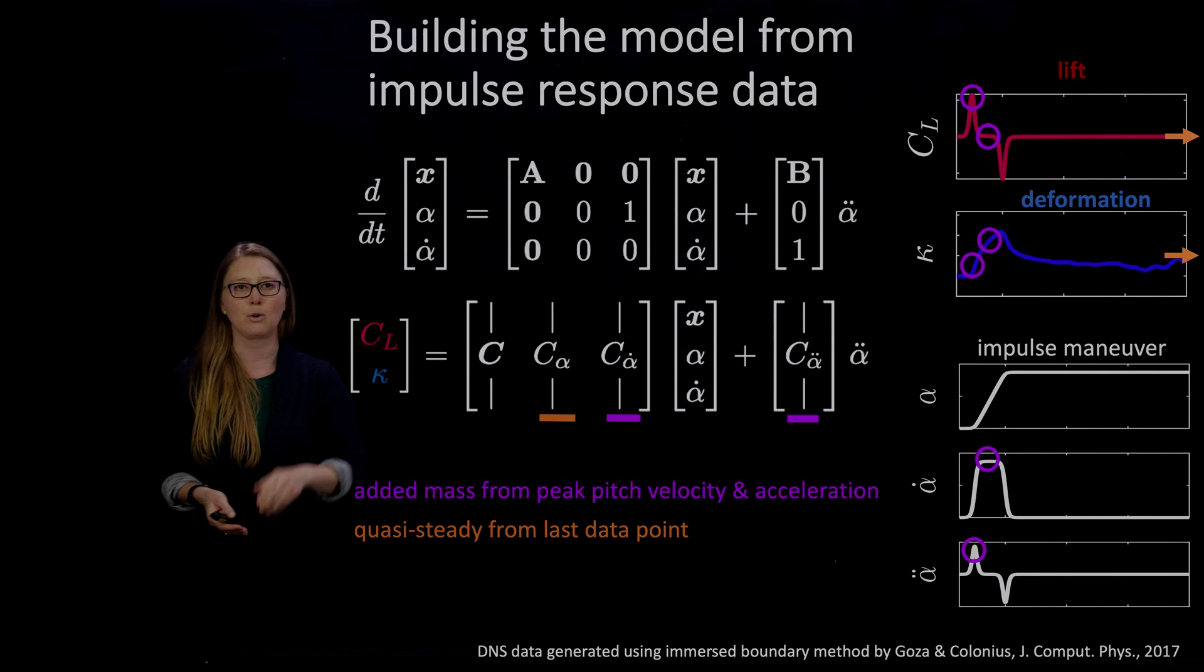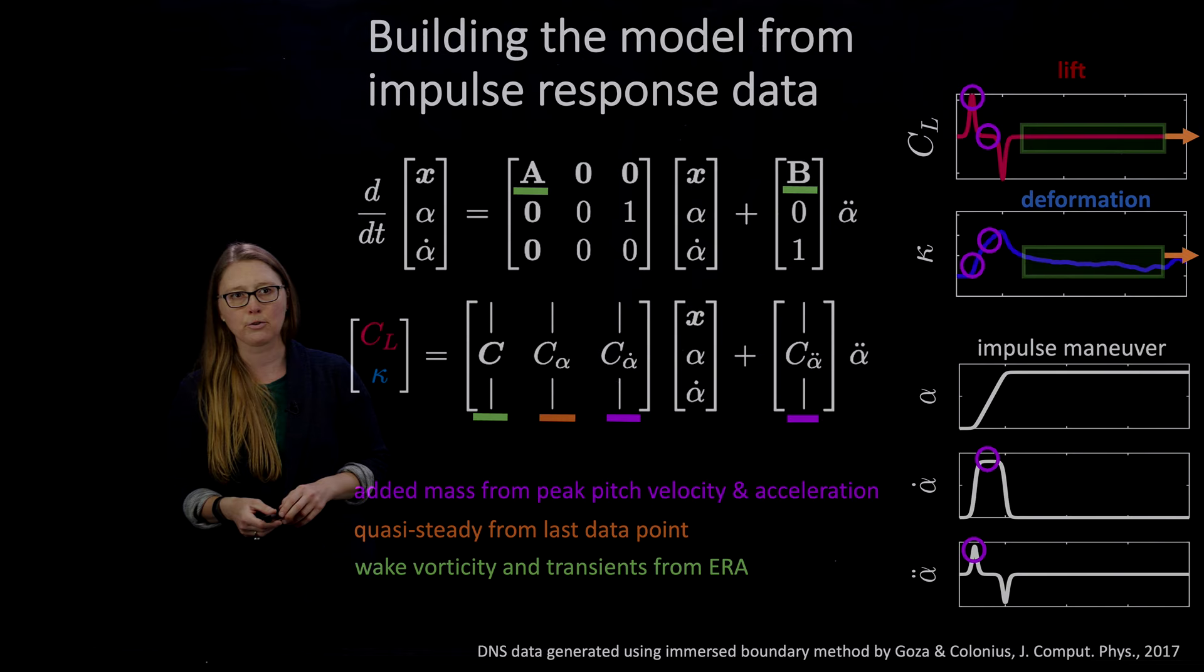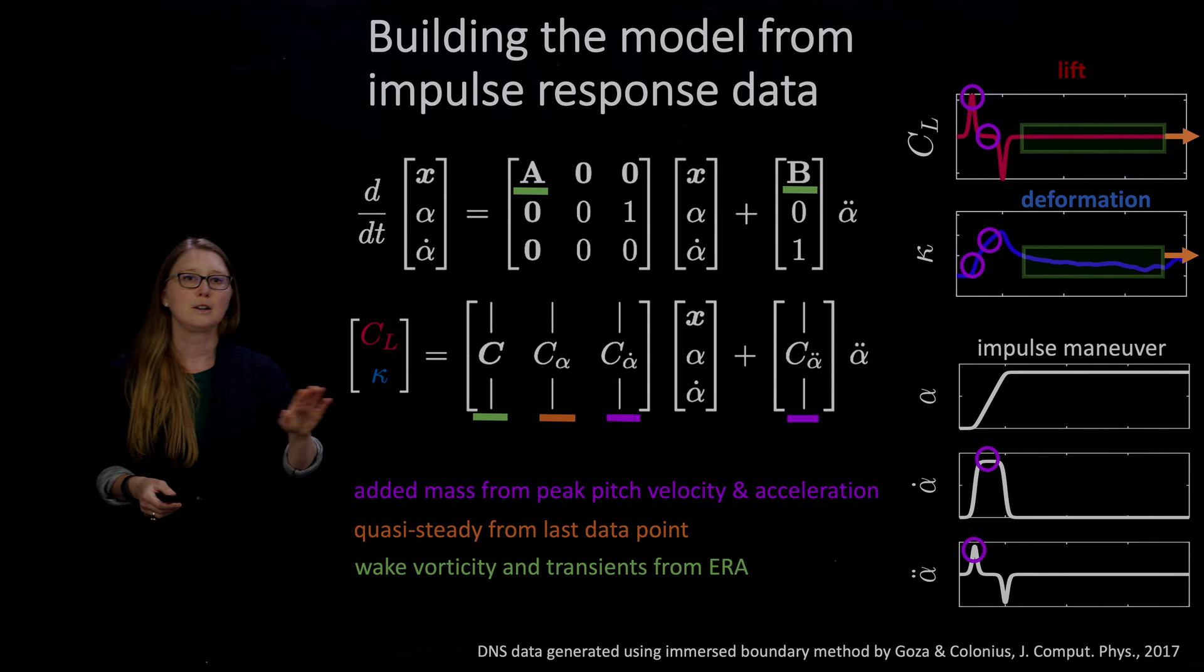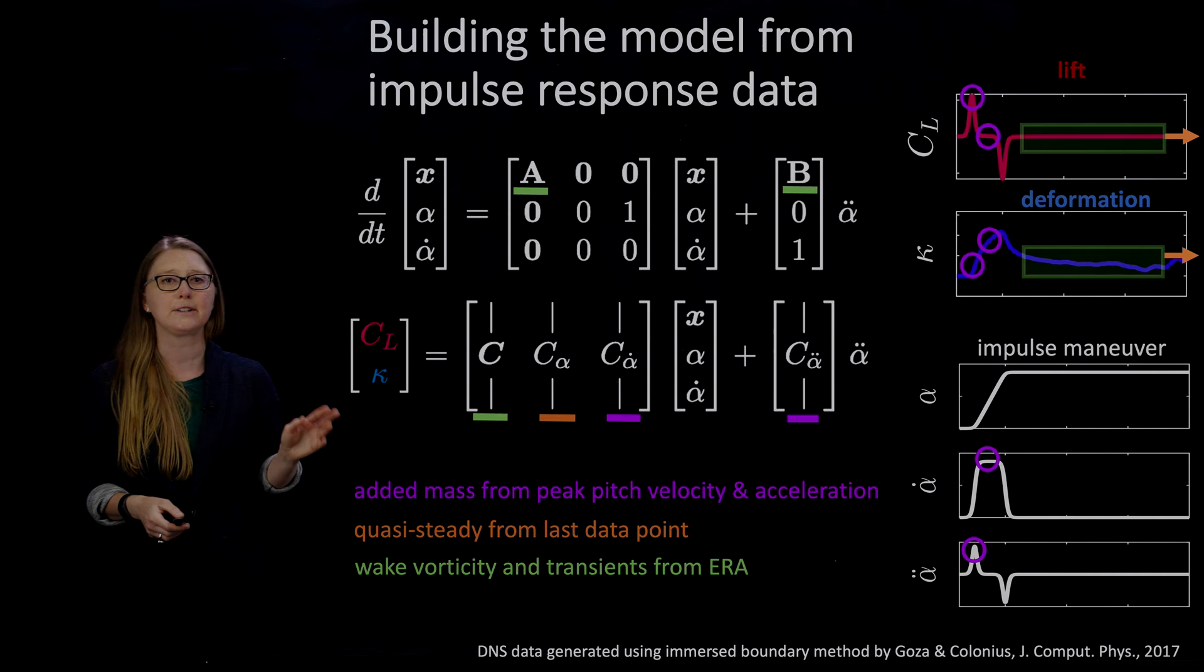And then, all the other stuff. So we are going to use ERA, eigensystem realization algorithm, to get the A matrix, the B matrix, and the C matrix that captures all of the transients and the wake vorticity. So this is the bending, the shedding of vortices. If you aren't familiar with ERA, I recommend watching Steve Brunton's videos on ERA to catch up on that. And you can also get more details about the exact ways to build this model from our paper.